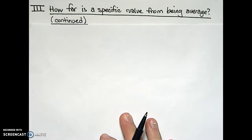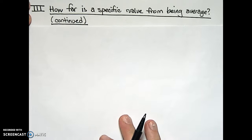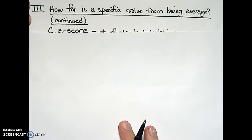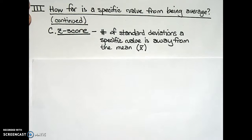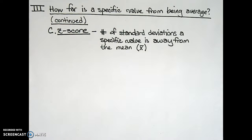In this video, what we're going to look at is the z-score. The z-score is defined to be the number of standard deviations a specific value is away from the mean. So let's consider a few examples of z-score.